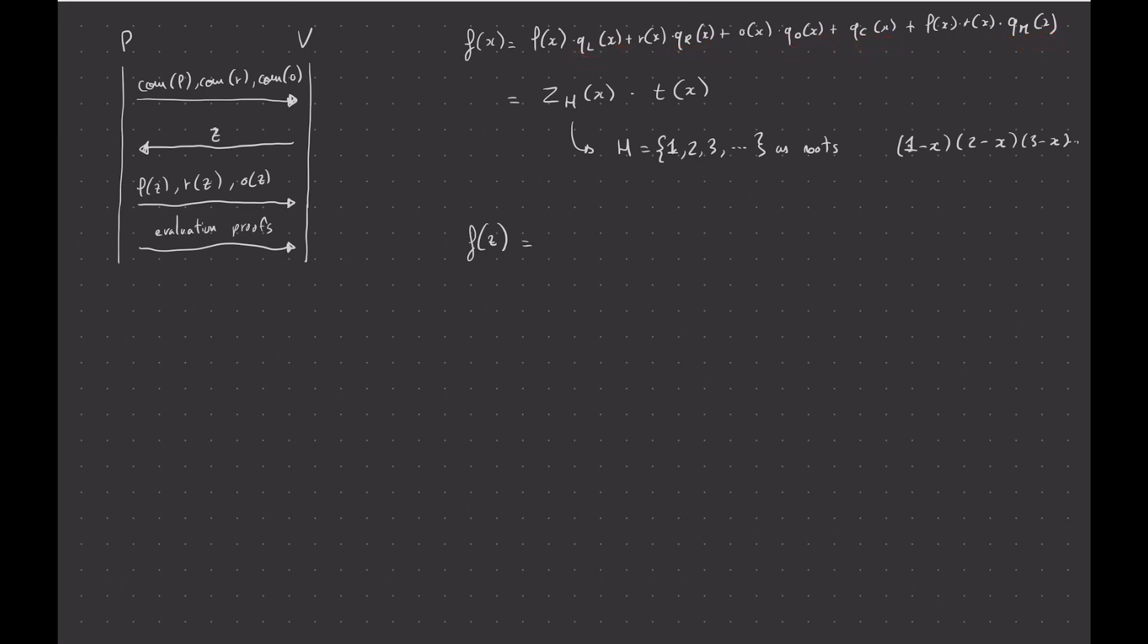And the evaluation of this polynomial at z, which you know. You can compute it yourself. And then you can compute z_h at z, because that's your polynomial. And you know z is your challenge. And oh, you need t of z, right? So actually, I forgot here, but the prover also sends a commitment to t. And here, I guess they'll send t of z, because you need that as well.